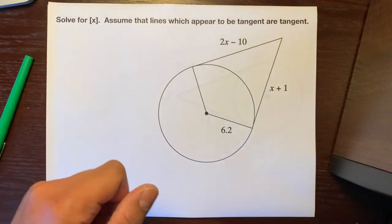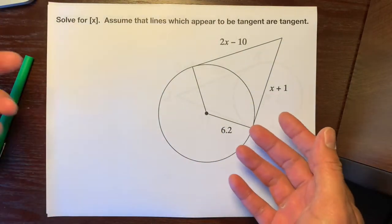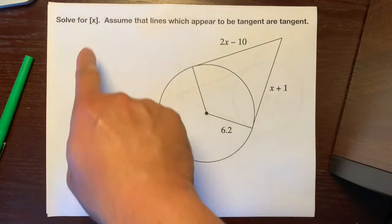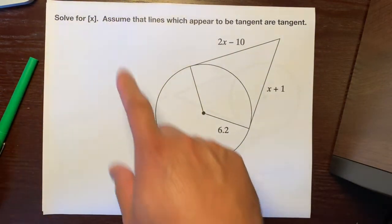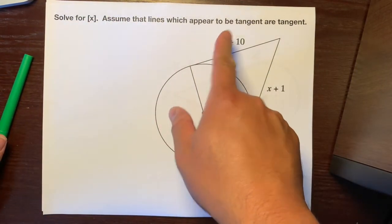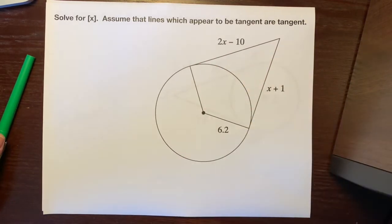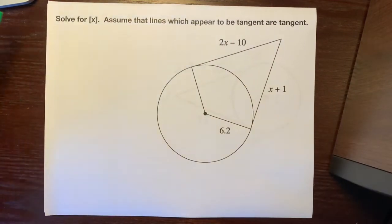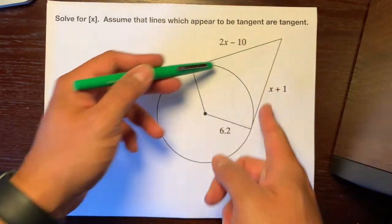Hello, this is Mr. Kinyanola, and I'm going to help you figure out what x is. So it says, solve for x. Assume that lines which appear to be tangent are tangent. So let's look at this diagram right here, and they give us two tangent lines.